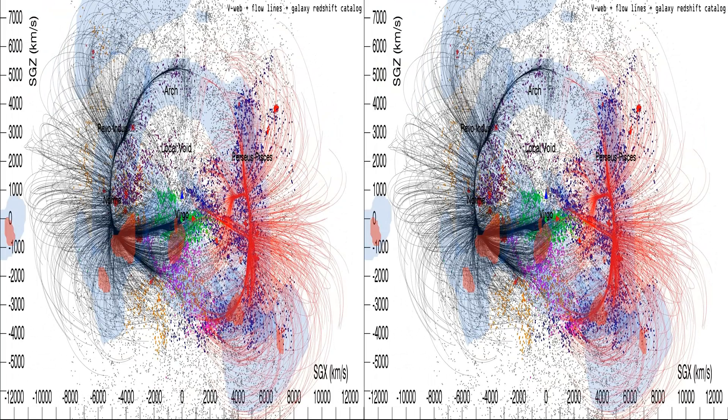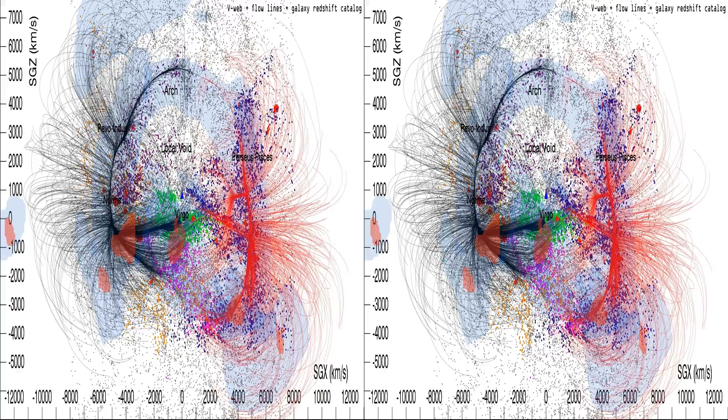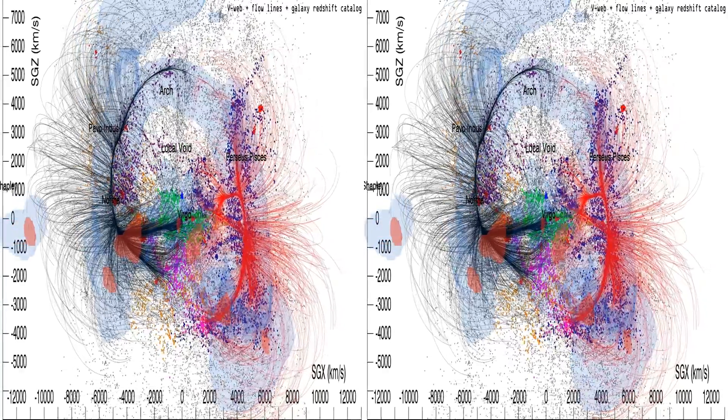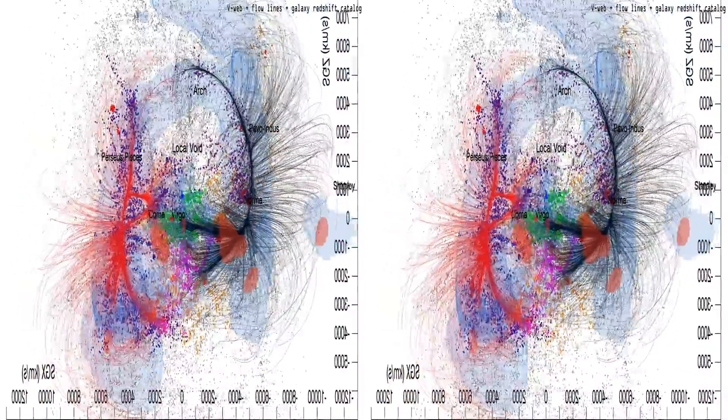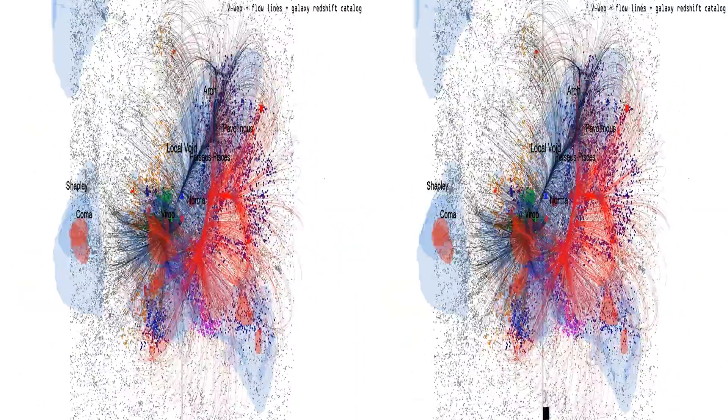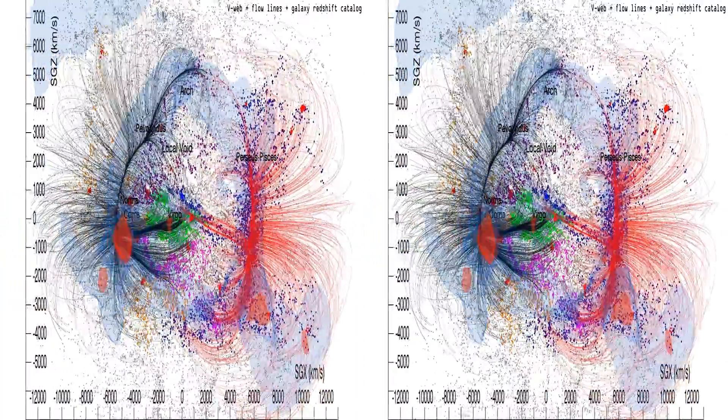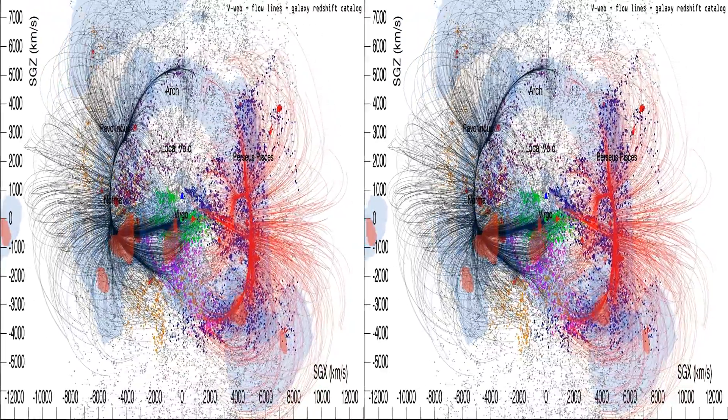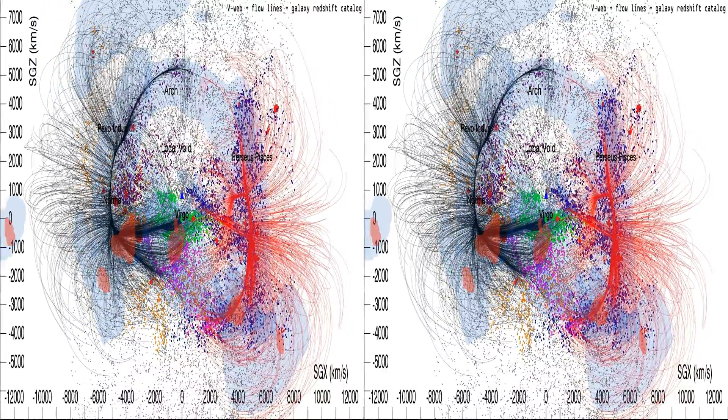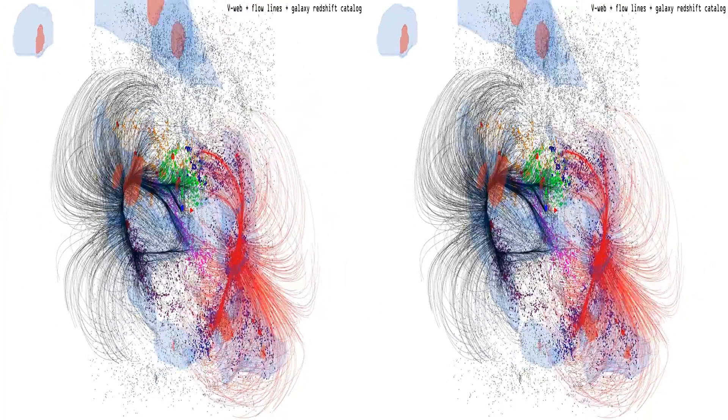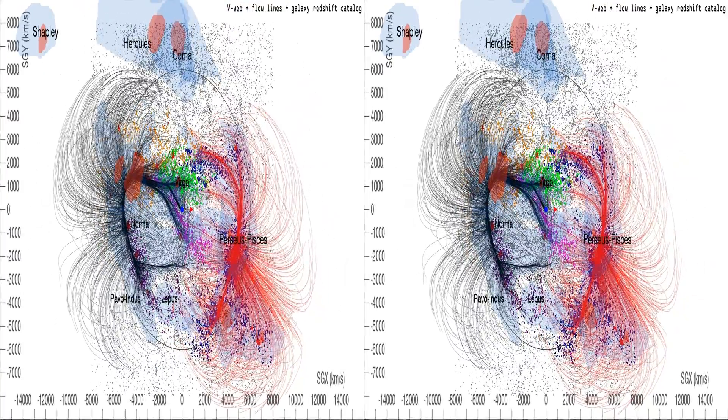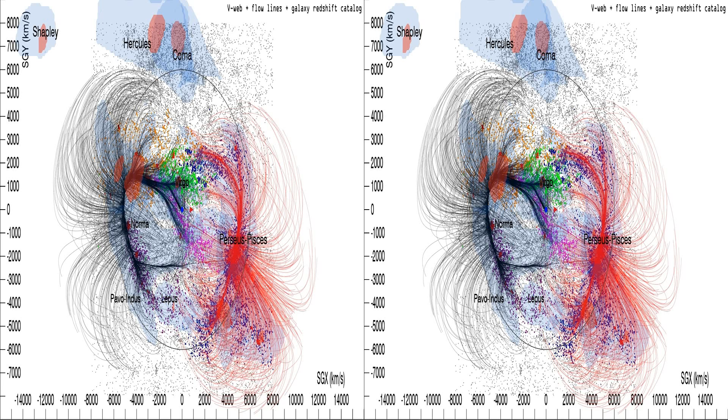Galaxies from a redshift catalogue are superimposed with colours associating them with separate major features. The black circle centered at our location defines the region of densities giving rise to these local cosmic flows represented in black and red.